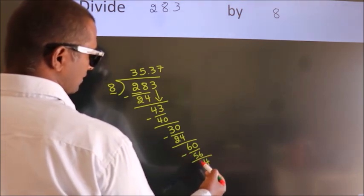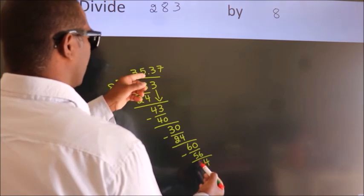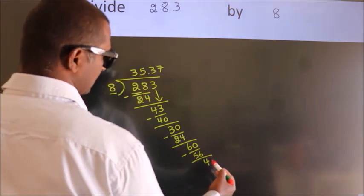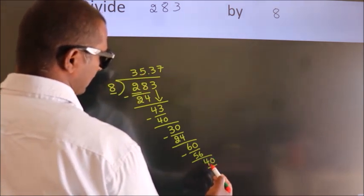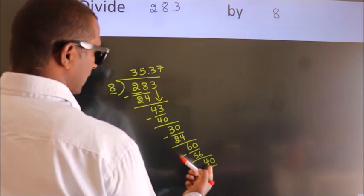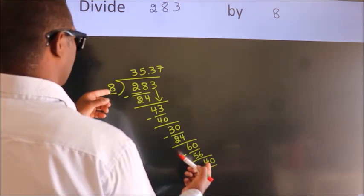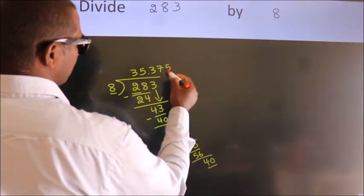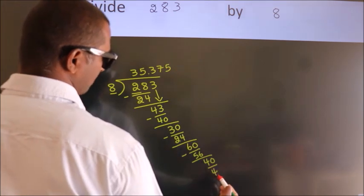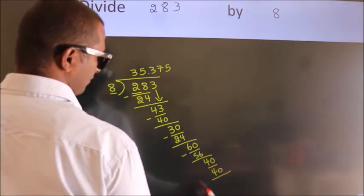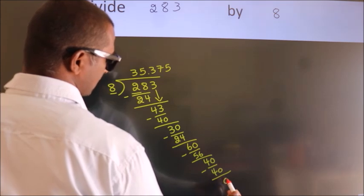After this, we already have the decimal, so directly take 0. So, 40. When do we get 40? In 8 table, 8 fives, 40. Now we subtract. We get 0.